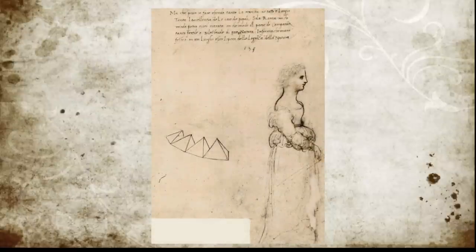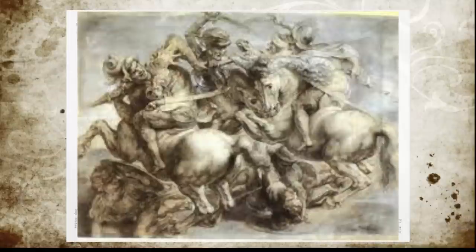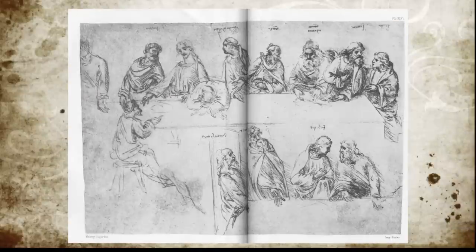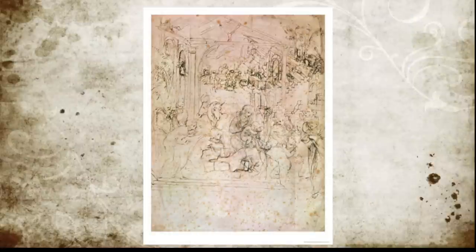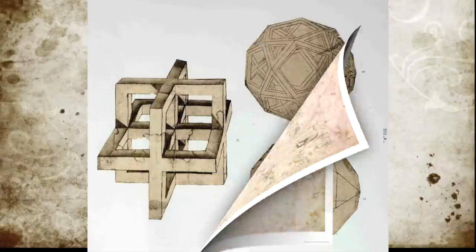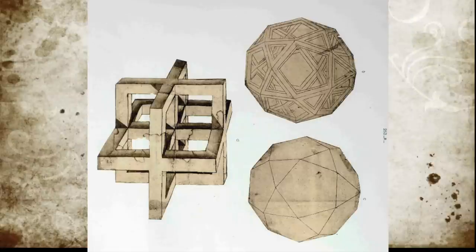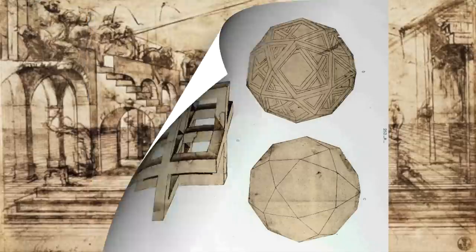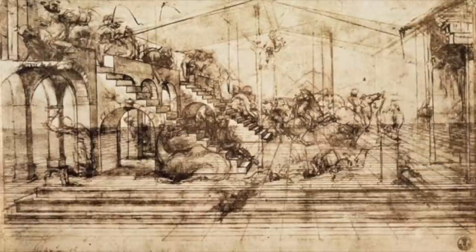Leonardo da Vinci also planned out many of his paintings in his notebook. Here are two sketches that were the bases for his painting, Battle of Anghiari. Here are two plans to his painting, The Last Supper. He also made and used a rural perspective that stated that a painting should be positioned at eye level of the viewer. He also came out with the vanishing point, which gives paintings a more real look, like right here on this painting.